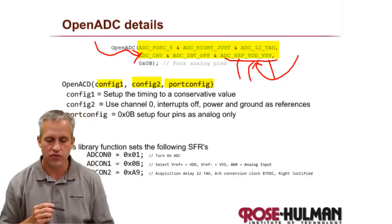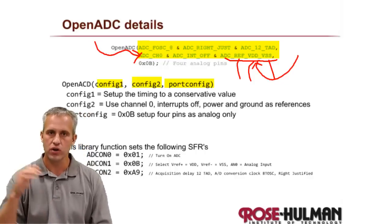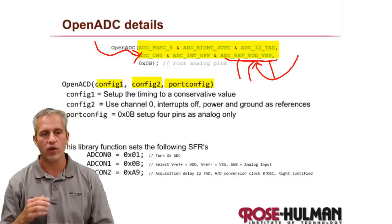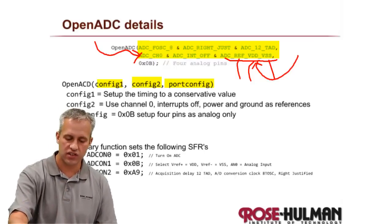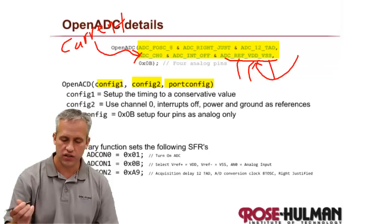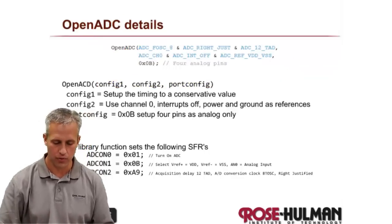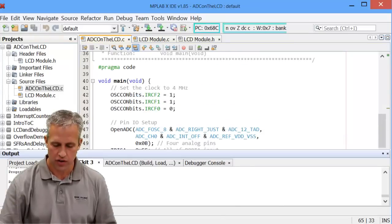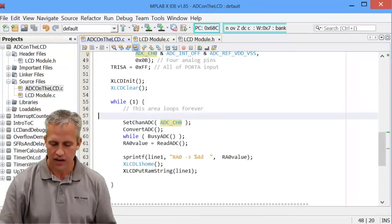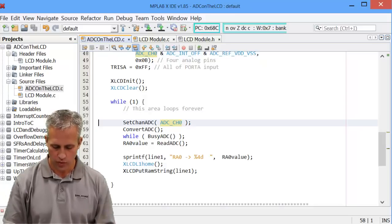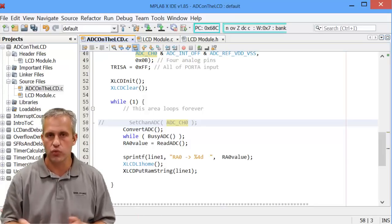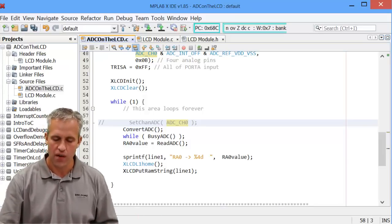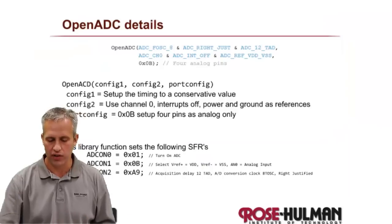You might have noticed there's an ADC channel zero inside the openADC call. There always has to be one channel selected as the current channel — all it does is set the current channel. In our previous example, the default was channel zero and we only ever used one, so we could have commented that line out. But it's good to know because you normally will need it.